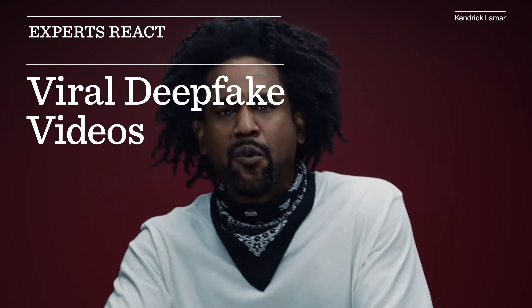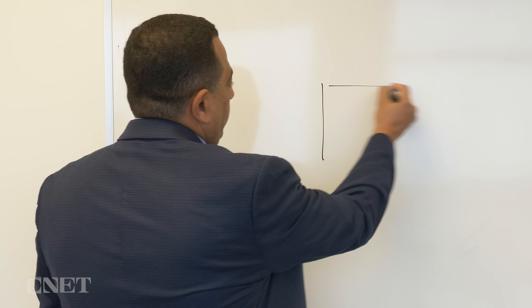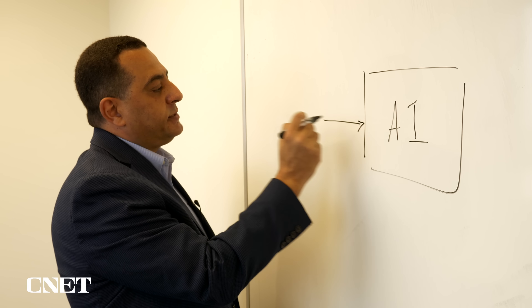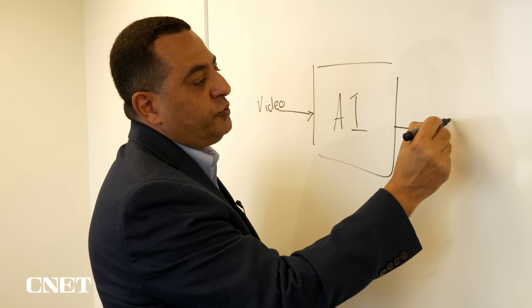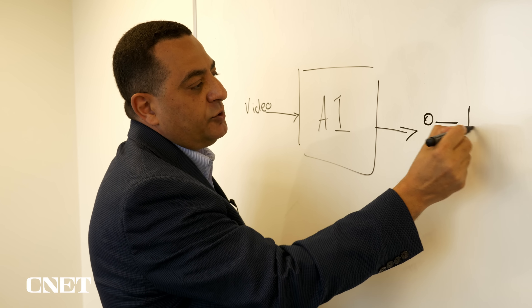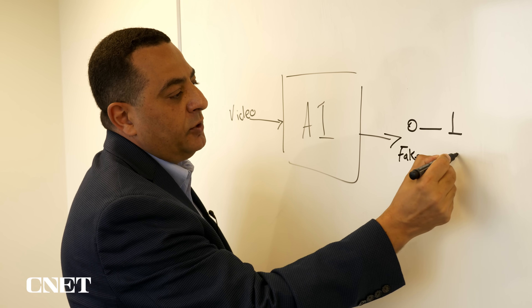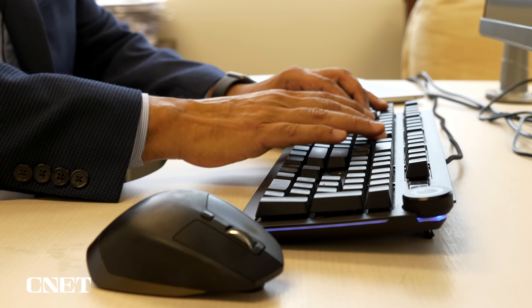We have been working for the last few years on developing different generations for detecting deepfakes. We create artificial intelligence algorithms that take as an input any given video, whether this video is fake or real, since we don't know. The AI algorithm produces a number between 0 and 1 indicating whether this video is actually fake or real. Let's have a look at some videos and see whether we can judge whether they are fake or real.